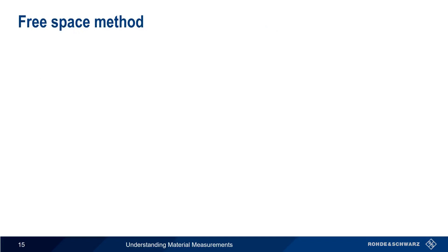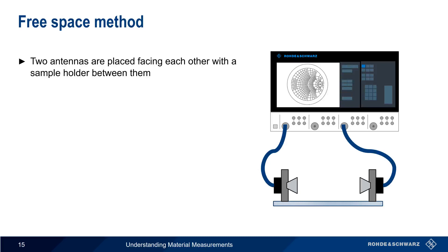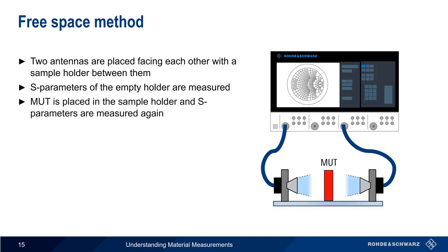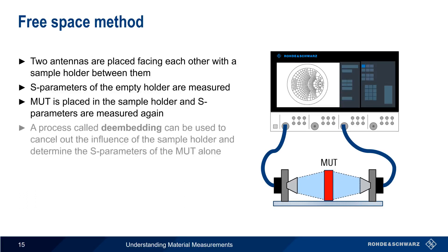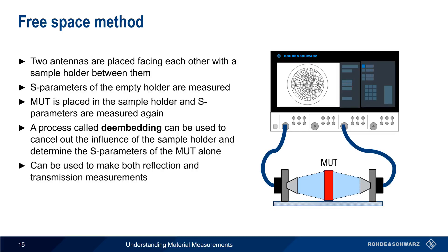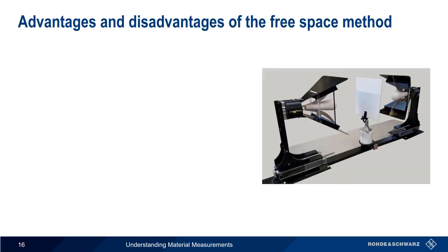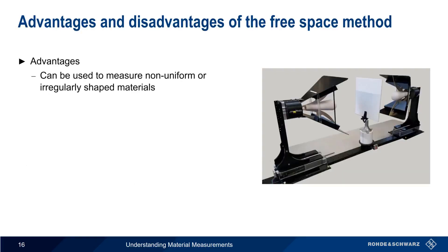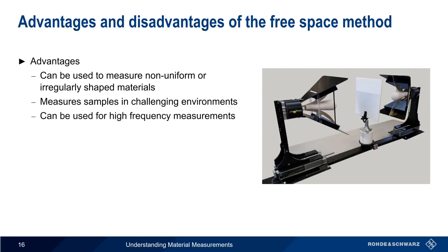The free space method is helpful in the case where we have an irregularly shaped or non-uniform sample that we want to test. It consists of two antennas facing each other with a sample holder in between. S-parameters are first measured for the empty sample holder, then the material under test is placed in the sample holder and S-parameters are measured again. A special mathematical process called de-embedding can be used to remove or cancel out the influence of the sample holder and determine the S-parameters of the material under test. Note that the free space method can be used for making both reflection and transmission measurements. One advantage is that it can measure non-uniform materials such as composite materials, or irregularly shaped materials such as a honeycomb. It can also be used to measure samples in challenging environments such as under very high temperatures, and is suitable for very high frequency measurements.